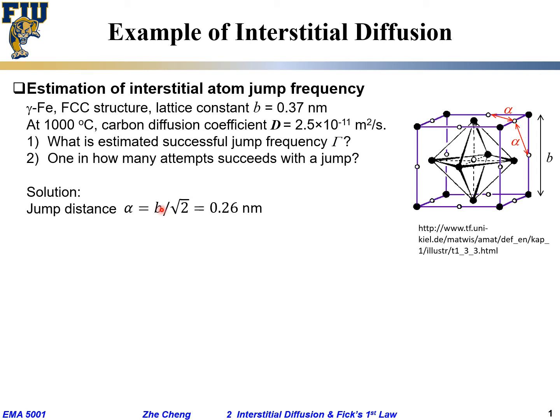Do you see that α is b divided by square root of 2? Or put it another way, this is b. From here to here is √2 times b. But from here to here is half of that. So √2 divided by 2, that's b divided by √2, which is 0.26 nanometer.